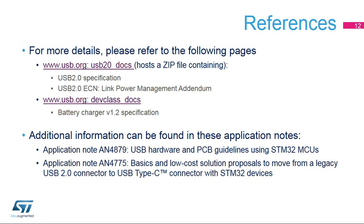For complete USB specification documents, please refer to USB.org. The USB 2.0 document homepage has a zip file containing the USB 2.0 and OTG 2.0 specifications and an Engineering Change Notice, or ECN, for Link Power Management, or LPM. The USB Device Class Documents page has the battery charger specification. Additional information can be found in these application notes.